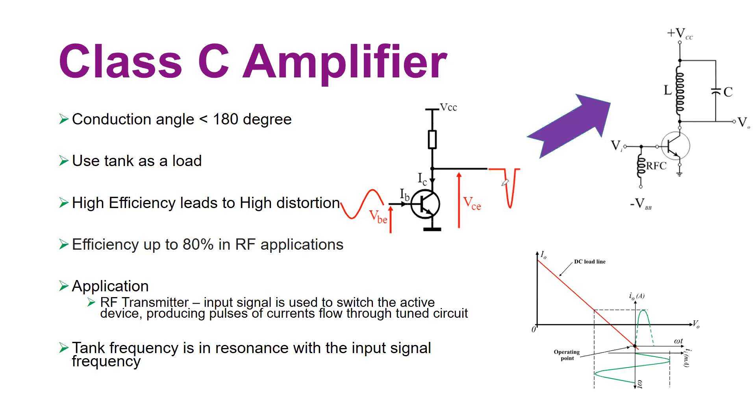As a result, your transistor produces short current pulses as shown, which then are flowing—these short current pulses are flowing through the load that is connected. But this time the load is not purely resistive or simply resistive.